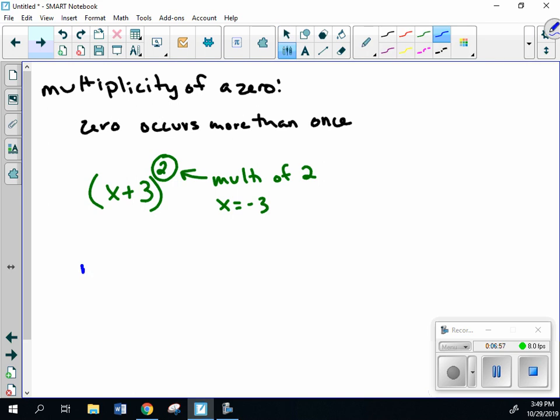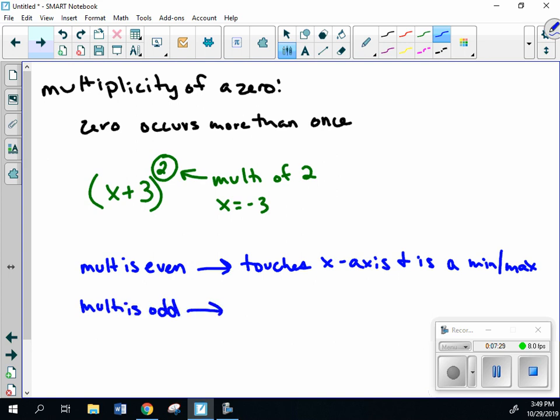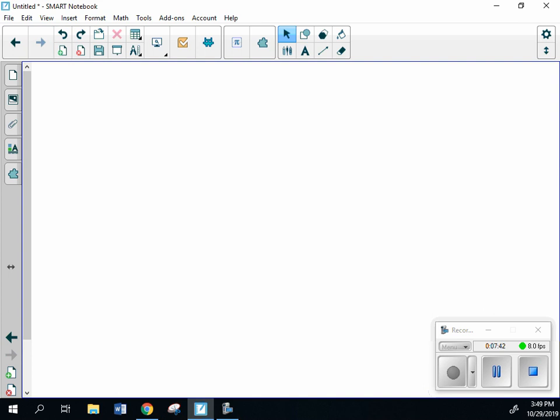Something unique about these multiplicities. If the multiplicity is even, then your graph is going to touch the x-axis but not cross it. So it touches x-axis and is a min or max. So if your multiplicity is odd, it's going to cross the x-axis. And we'll talk about that a little bit more in class when we're looking at an actual graph.